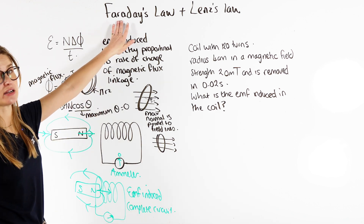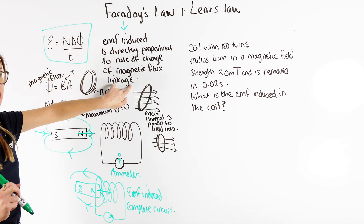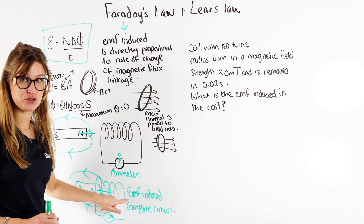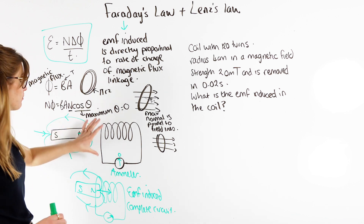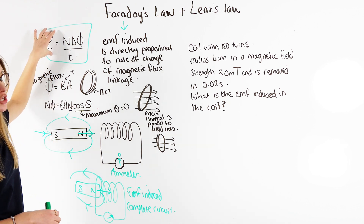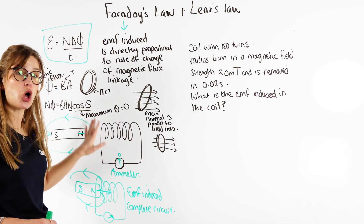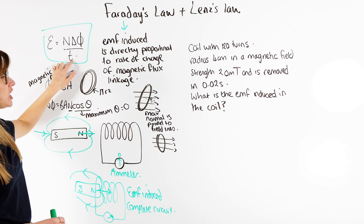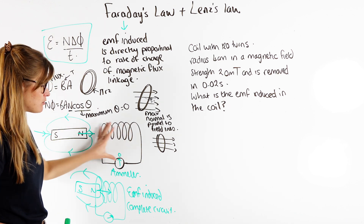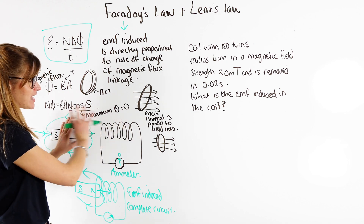So Faraday's law is that the EMF induced is directly proportional to the rate of change of magnetic flux linkage. For example, if I move this magnet in much faster, that's a quicker change of magnetic flux linkage, and I'm going to get a higher EMF induced. If we use a stronger magnet with more field lines, we get more field lines passing through in time and more EMF induced. As long as the magnet is moving — as long as we always have a change — we always get an EMF induced. If the magnet stops moving, there's no change over time, so there's no EMF induced.